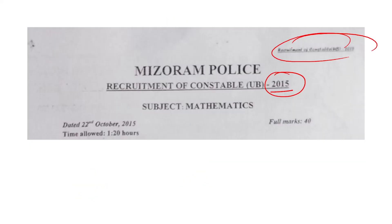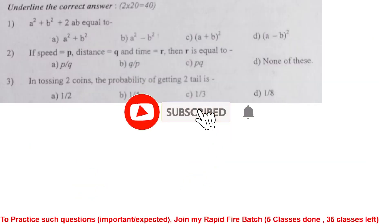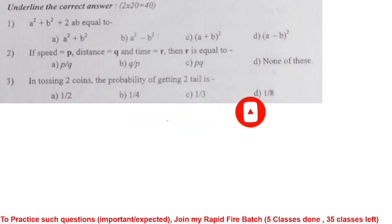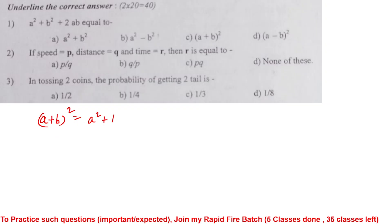So in this video, 2015 paper — here are the questions. First question: A square plus B square plus 2AB equals to what identity? The explanation is that A plus B whole square is equal to A square plus B square plus 2AB.